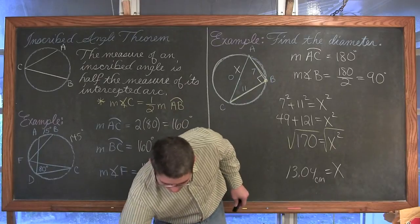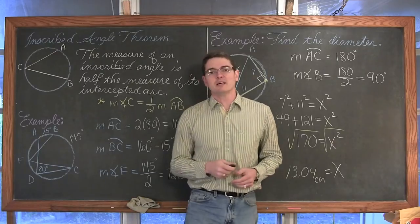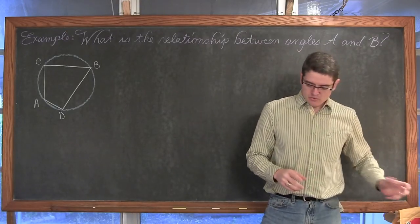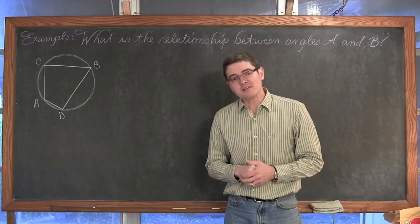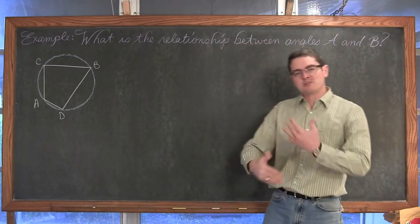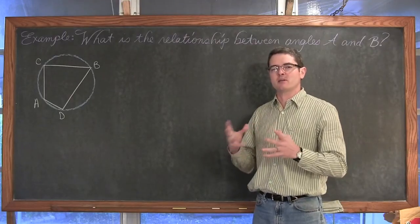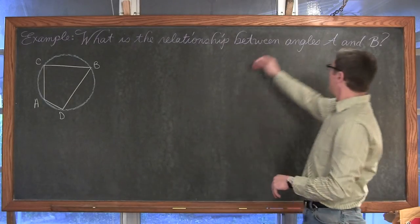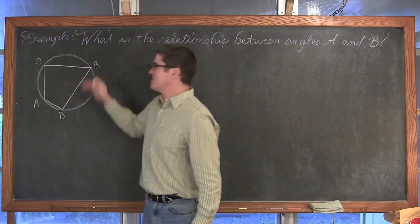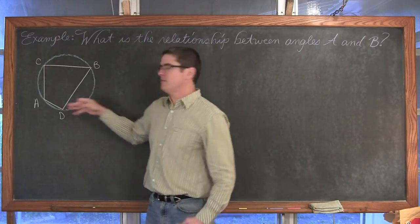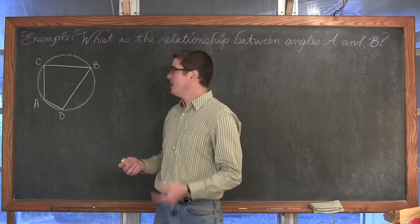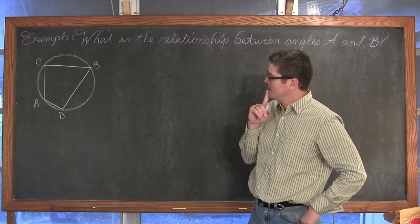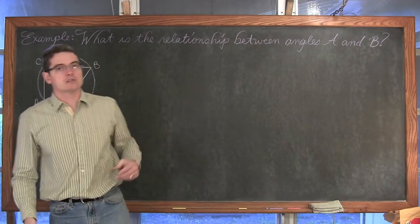Now we're going to do one example and introduce some corollaries related to inscribed angles. These two examples together help explain the corollaries I'll write up on the next screen. The question is: what is the relationship between angles A and B? I have two inscribed angles in the circle sharing common endpoints — essentially a quadrilateral where we have opposite inscribed angles. Let's find out how they're related.